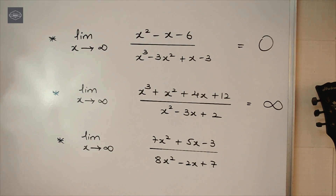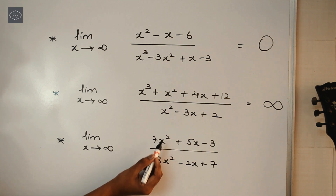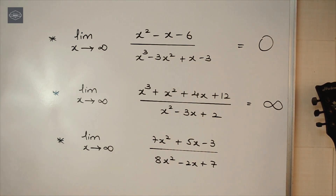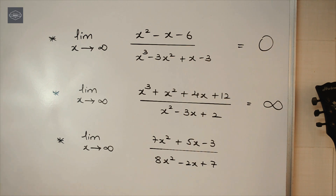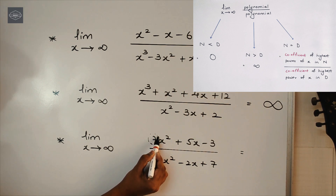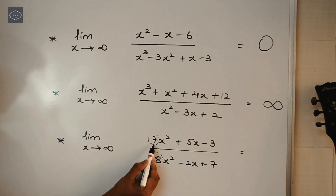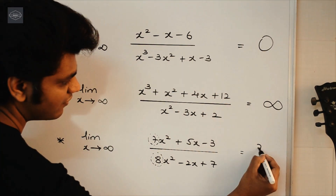And for the last one, the degree of numerator is 2 and the degree of denominator is also 2. So the degree of numerator is equal to the degree of denominator. In this case, the answer is the coefficient of the highest power of x in the numerator upon the coefficient of the highest power of x in the denominator. So here, the answer is 7/8.